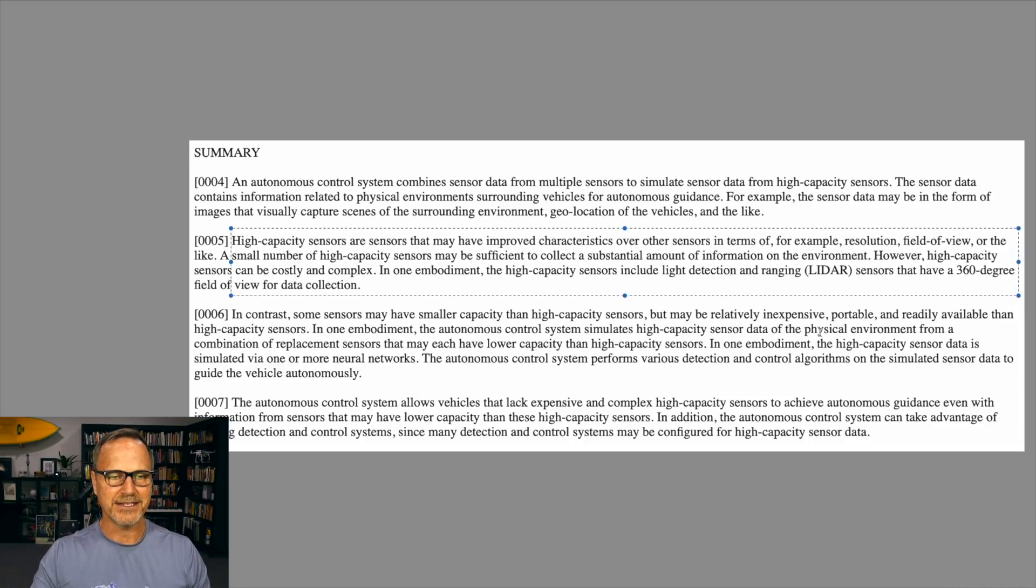Paragraph five here says, high-capacity sensors are sensors that may have improved characteristics over other sensors in terms of, for example, resolution, field of view, or the like. A small number of high-capacity sensors may be sufficient to collect a substantial amount of information on the environment. However, high-capacity sensors can be costly and complex. In one embodiment, the high-capacity sensors include light detection and ranging, or LiDAR, sensors that have a 360-degree field of view for data collection.